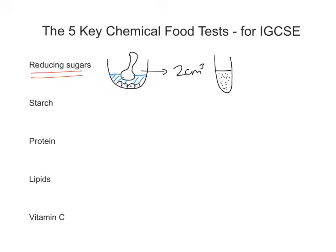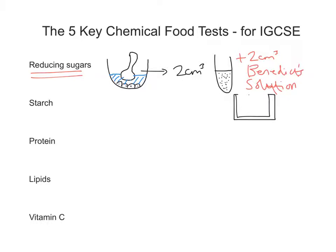So we've got a test tube of a sample. What we want to do is add roughly two centimetres cubed of Benedict's solution. Then we need to place that into a water bath at a minimum of 70 degrees Celsius. We place our tube — which now has Benedict's solution added — into the water at roughly 70°C or more, and we're looking for a colour change after about three minutes or so.